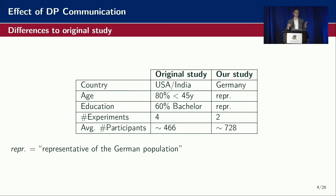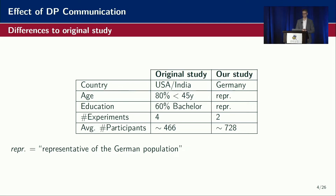Here is a small overview of the differences between our sample and the original. Our sample was Germans, representative of the German population in terms of gender, age, and education. Whereas in the original study, conducted on MTurk, the sample was heavily skewed towards younger, higher educated people, primarily from the U.S. and India.